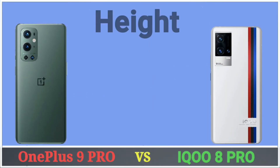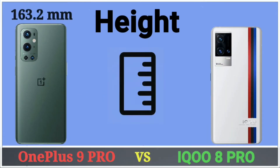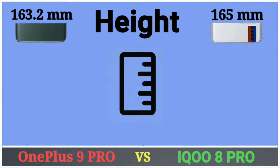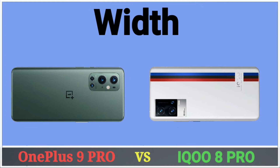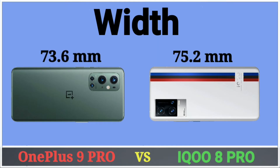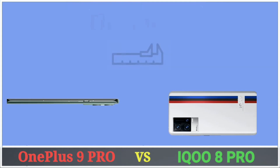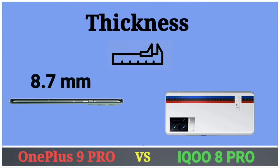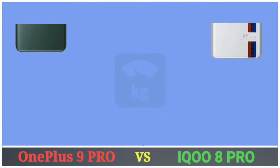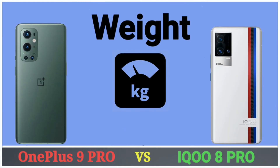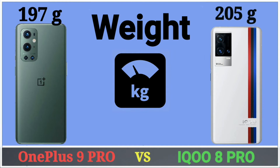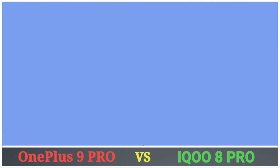First of all I start with dimensions. OnePlus 9 Pro has 163.2mm height and iQOO 8 Pro has 165mm height. OnePlus 9 Pro has 73.6mm width and iQOO 8 Pro has 75.2mm width. OnePlus 9 Pro has 8.7mm thickness and iQOO 8 Pro has 9.2mm thickness. OnePlus 9 Pro has 197 gram weight and iQOO 8 Pro has 205 gram weight.